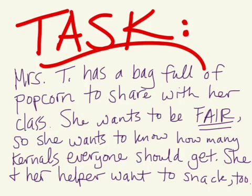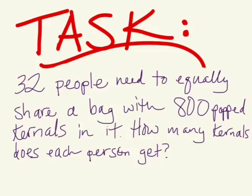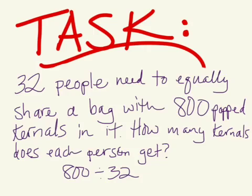Mrs. Tallestai has a bag full of popcorn to share with her class. She wants to be fair and know how many kernels everyone should get. She and her helper want to snack too, so 32 people need to equally share a bag with 800 popped kernels. How many kernels does each person get? We have a division problem: 800 divided by 32. First things first — make a 30-second estimate, then actually solve the problem. You'll share what you came up with in groups tomorrow. Use partial quotients to solve this problem. Have fun!